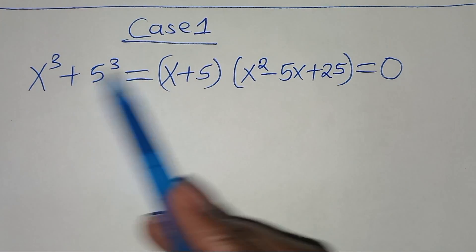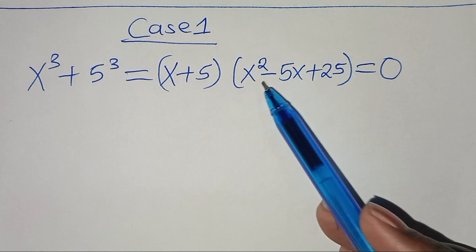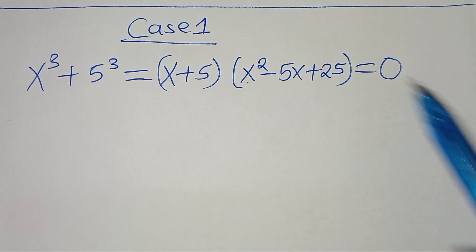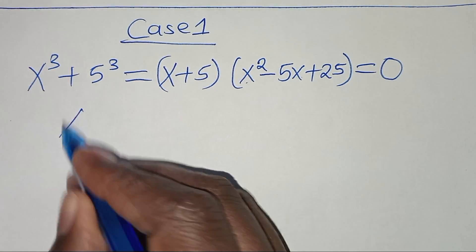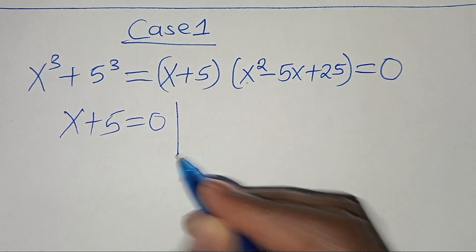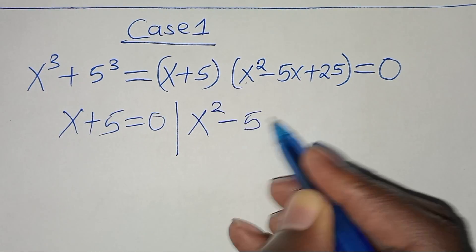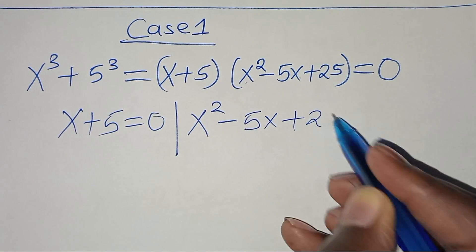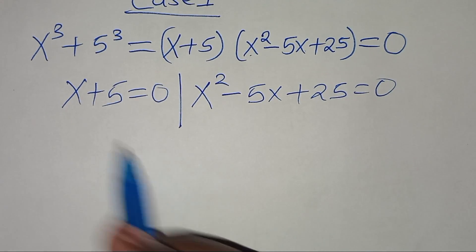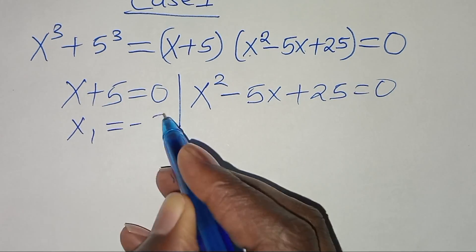So we have two parts: the first part is x + 5 equals 0, and the second part is x squared minus 5x plus 25 equals 0. From the first part, x₁ equals negative 5.